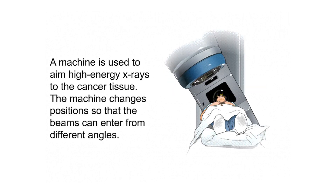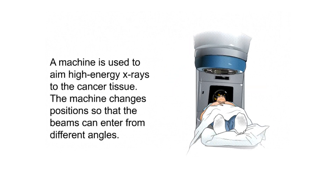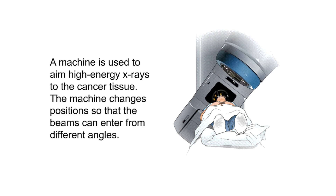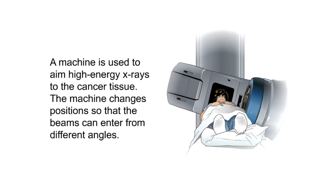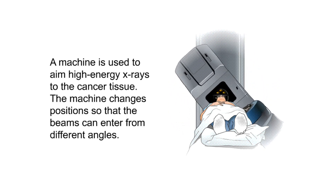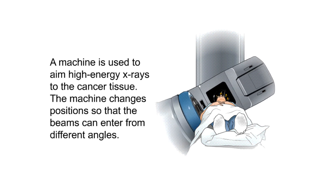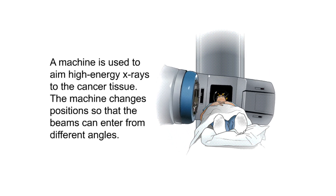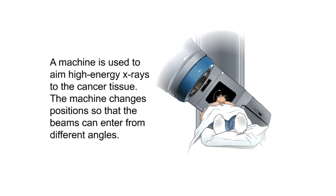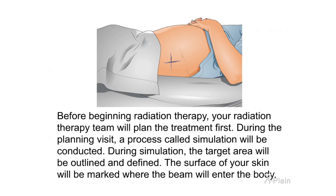External beam radiation. A machine is used to aim high-energy x-rays at the cancer tissue. The machine changes position so that the beams can enter from different angles. Before beginning radiation therapy, your radiation therapy team will plan the treatment first.